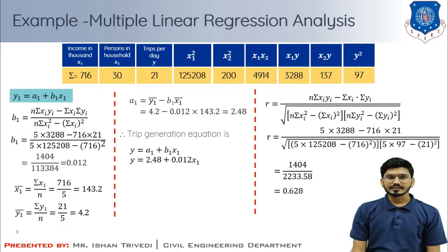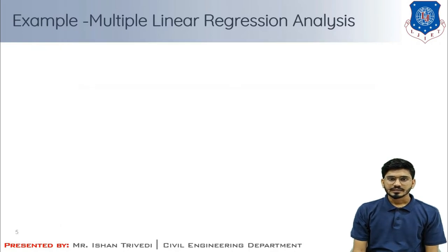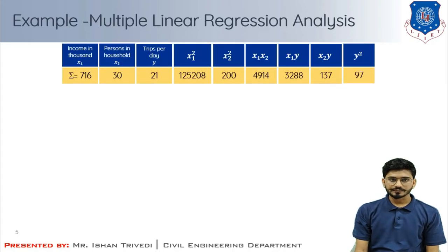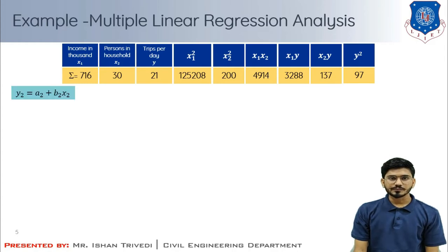Now we develop the second relationship between trips per day (dependent variable) and x2 (persons in household), continuing with the previously computed values of x1, x2, y, x1 squared, x2 squared, x1x2, x1y, x2y, and y squared. The second equation is y2 = a2 + b2*x2.